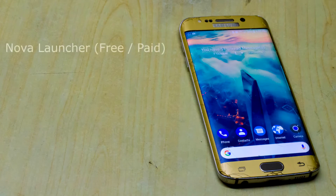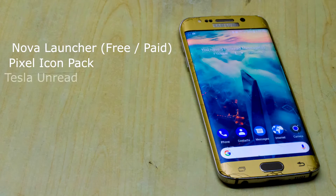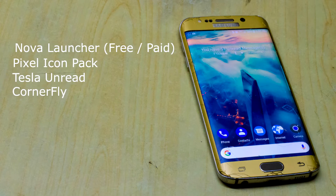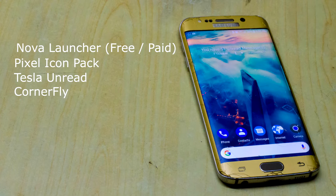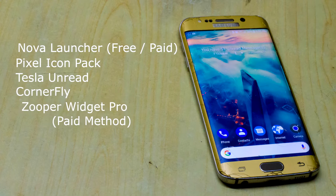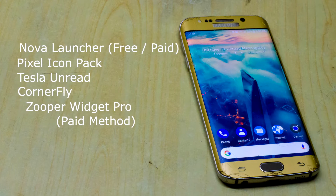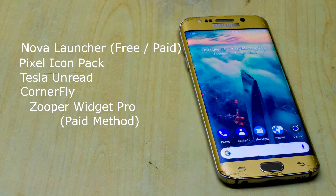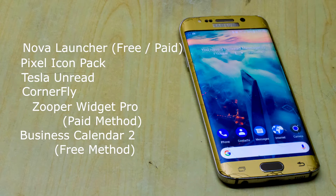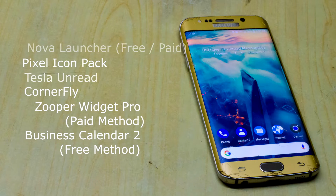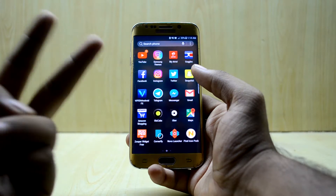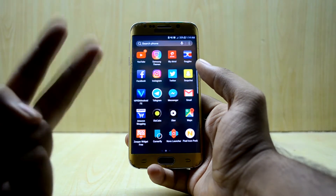You're going to need first of all the Nova Launcher, the Pixel Icon Pack, the Tesla Unread for Nova Launcher, the Cornerfly, and for the widget that you have in the Pixel 2, you have two options. That is the Zupa widget, which is exactly like the widget in the Pixel 2 UI, and the other option is the Business Calendar, which is a little bit different from the widget we saw in the Pixel 2. So there would be two methods of getting that UI.